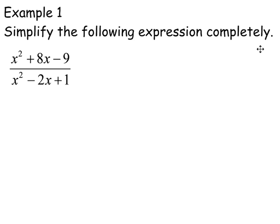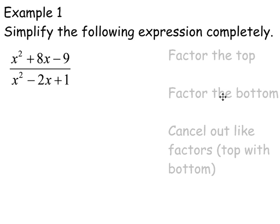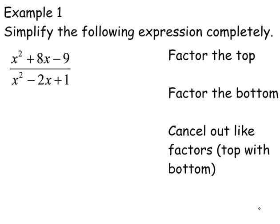So how do we simplify rational expressions? Well, it's essentially three steps. We're going to factor the top, factor the bottom, and then we're going to cancel out like factors.